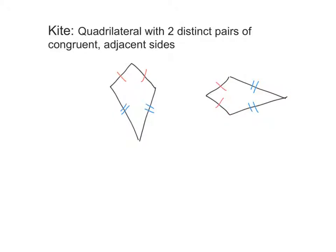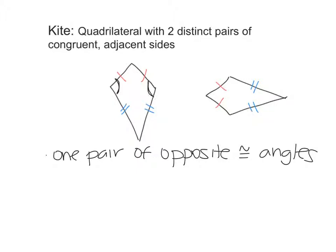Okay, so we know in this case that where these two different sides meet, that tells us something. We have one pair of opposite congruent angles. So they're right here, and then they would be right here, right where the two different side lengths meet.